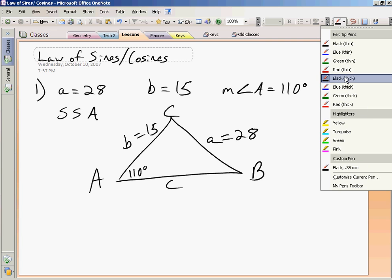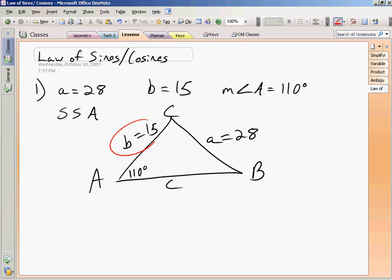I've got two sides and one angle, but it's not the included angle. If I knew angle C, it would be side-angle-side, but it's not the included angle, so it's side-side-angle.